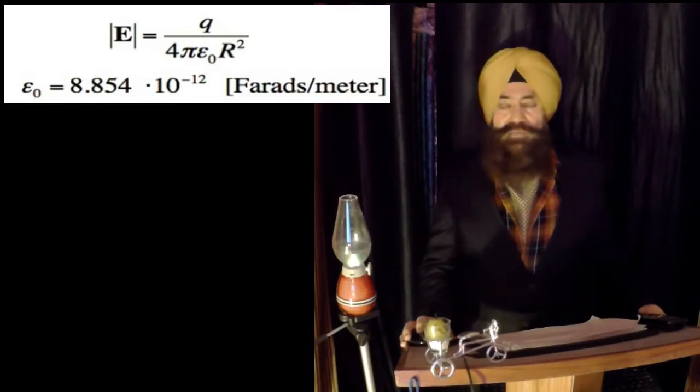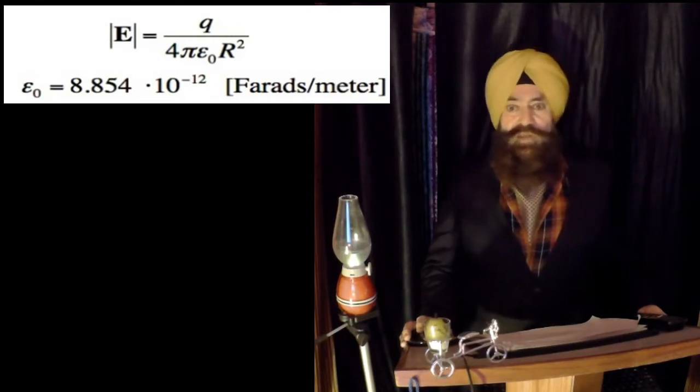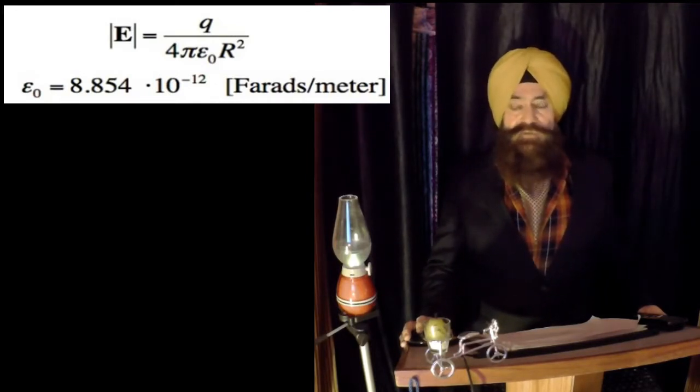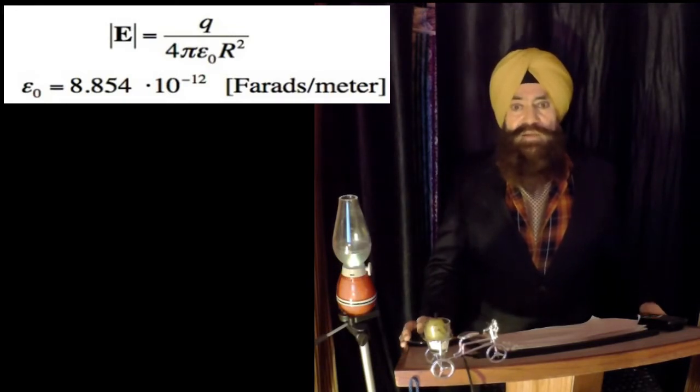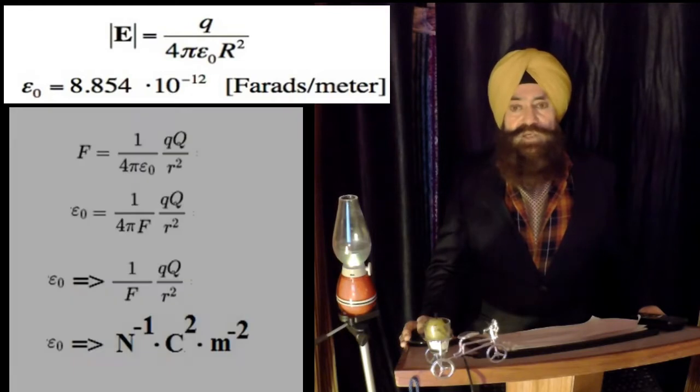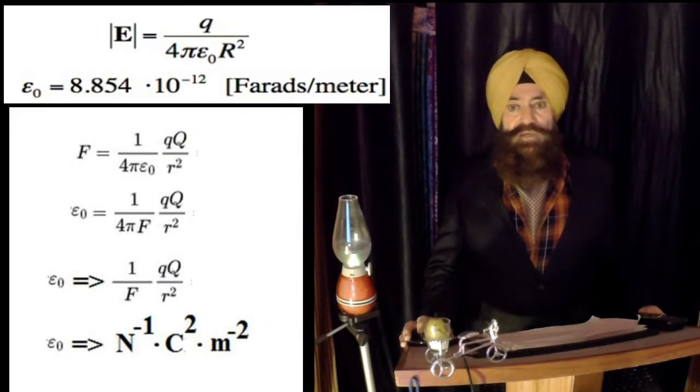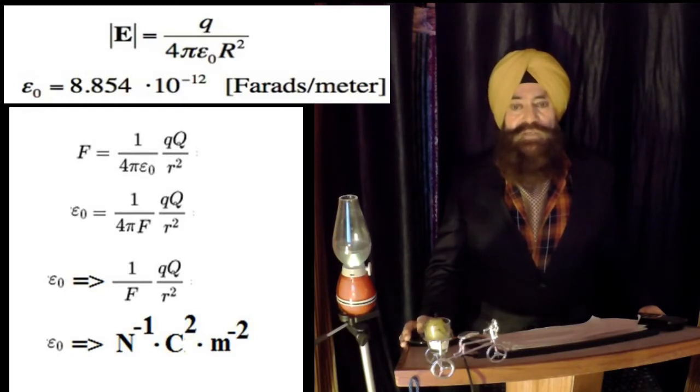Now, how is it farad upon meter? Think about the capacitors, the spherical capacitor. C is equal to 4 pi epsilon 0 into r. And what is epsilon 0? C divided by r. Of course, 4 pi also, but basically it is C upon r. C means farad, r means meter. So farad upon meter. And the other unit, this simplification, Newton minus 1 coulomb square meter minus 2. So permittivity of the free space is measured in farad per meter.